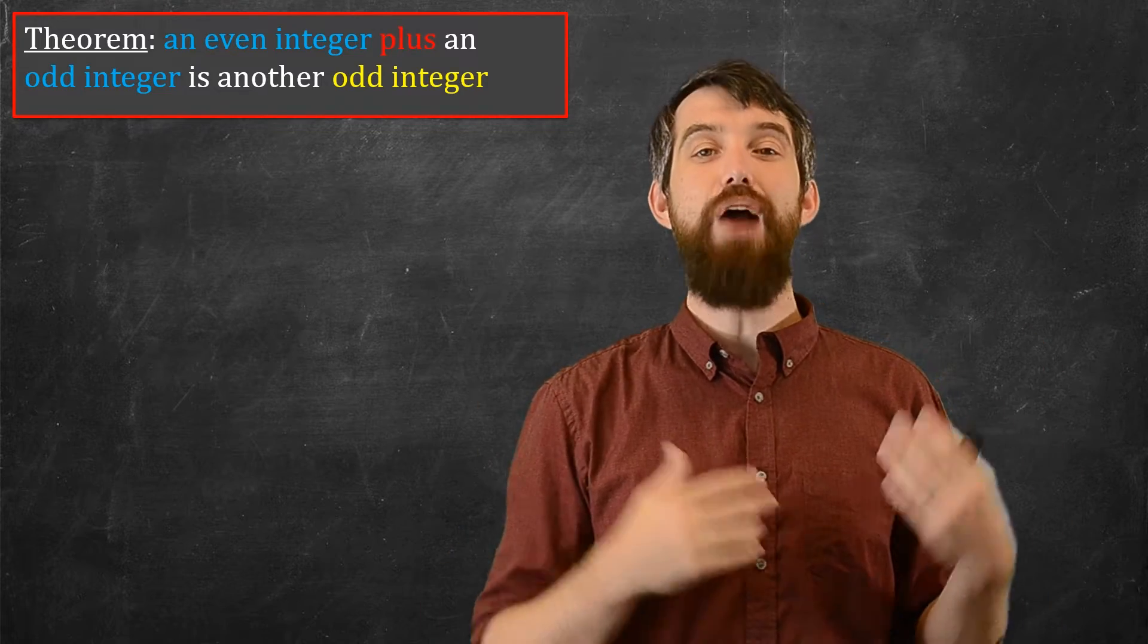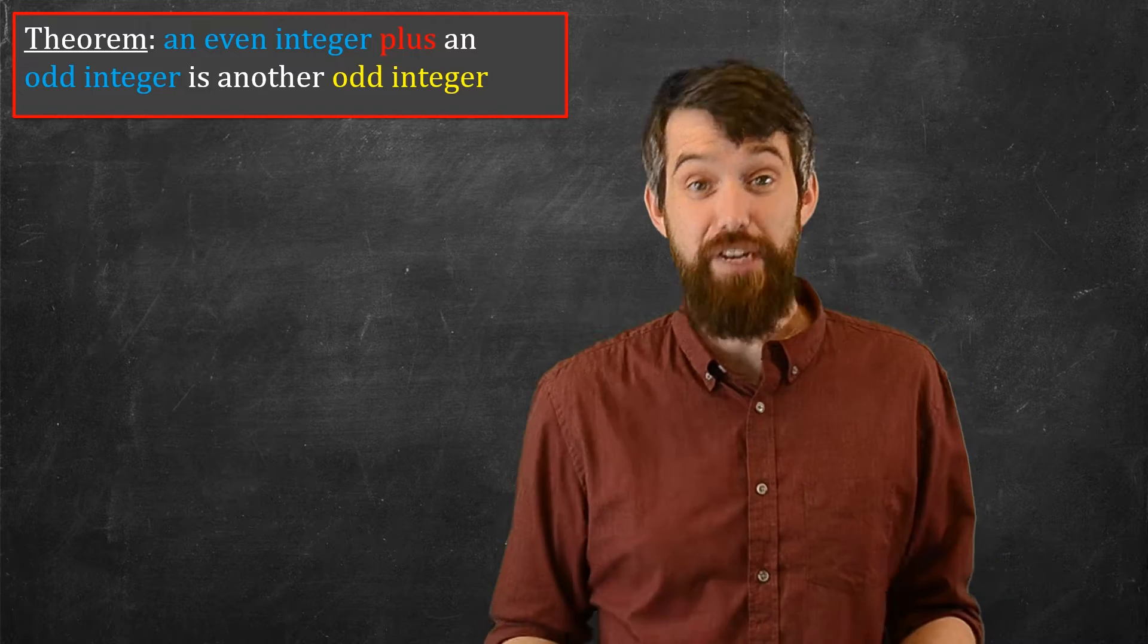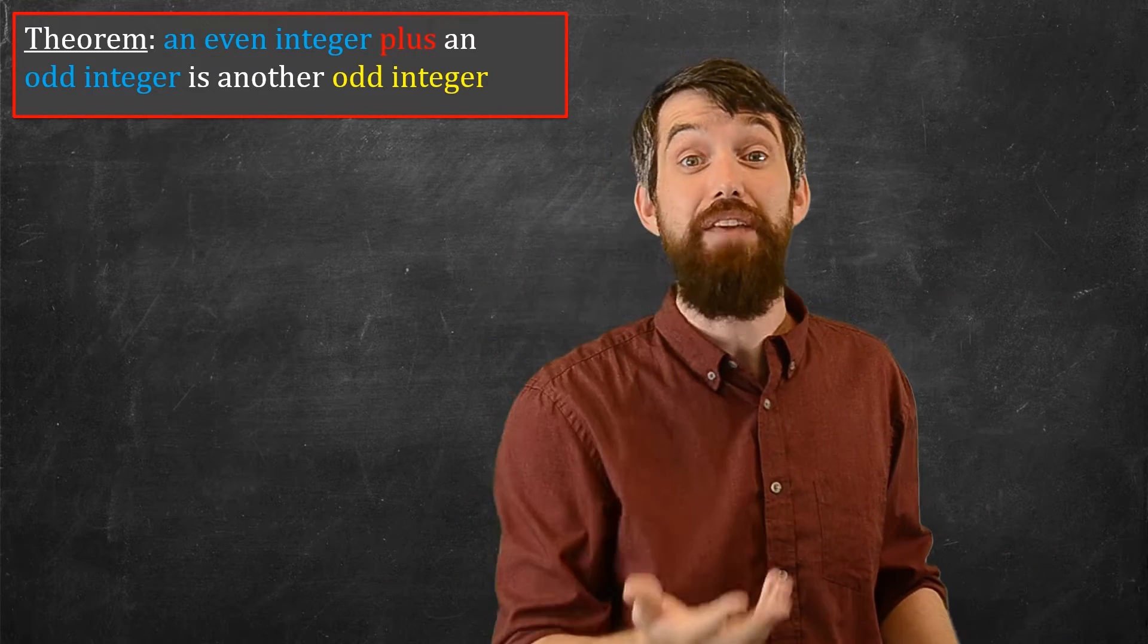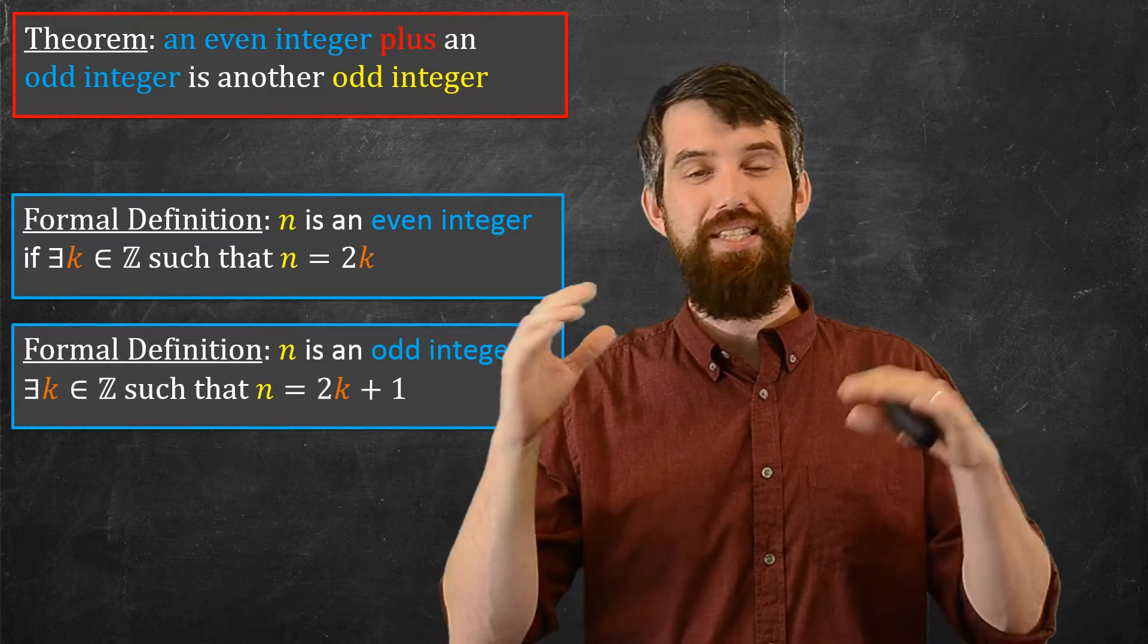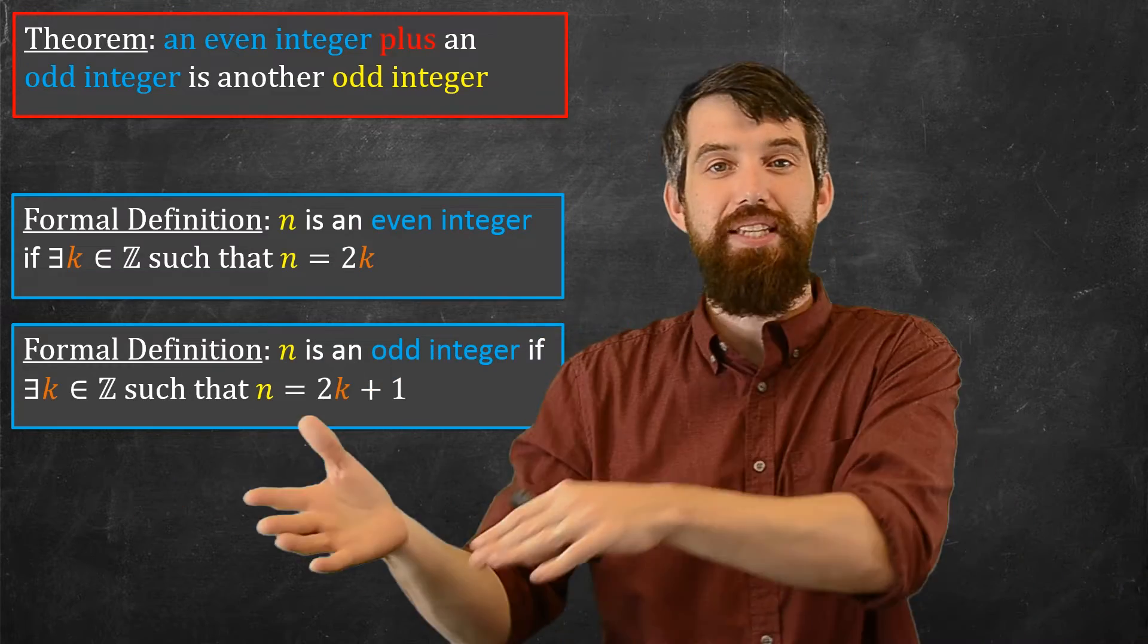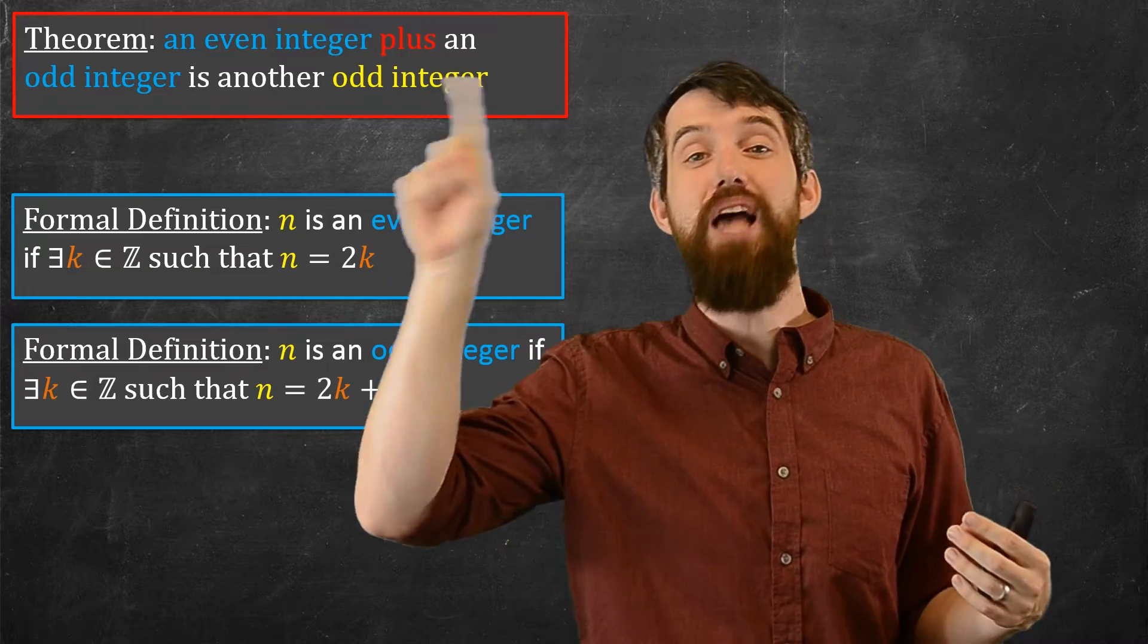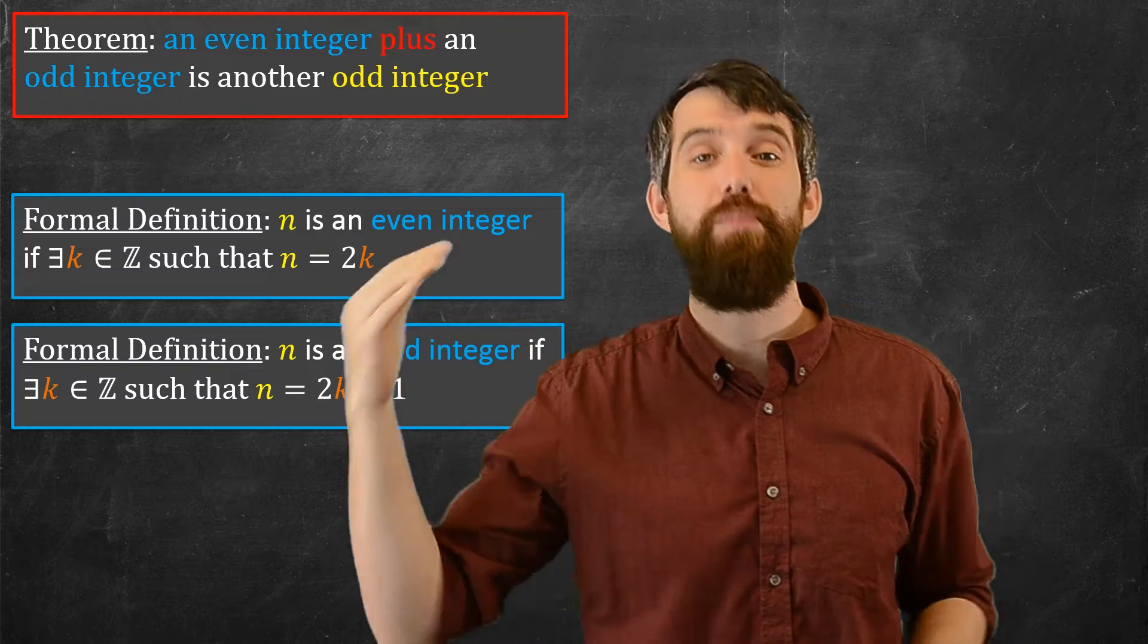The first thing I want to do is be precise about what we're actually saying here and what my definitions are. In the previous video, we saw the definition of being even and being odd, and there they are. We would say that an integer n was even if there was some other integer k where n was twice k, and we'd say that an integer n was odd if there was some other integer k such that your n was twice k plus one.